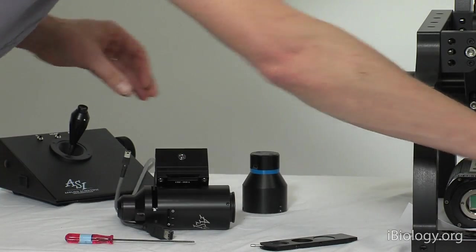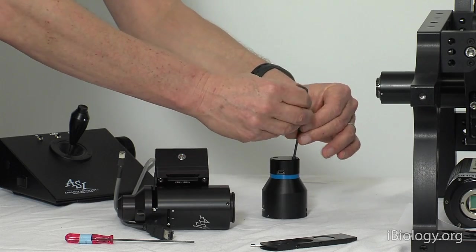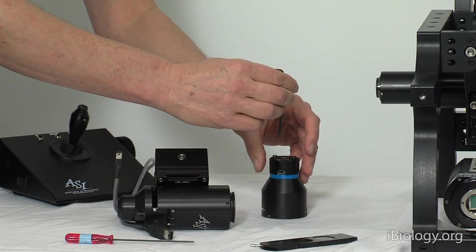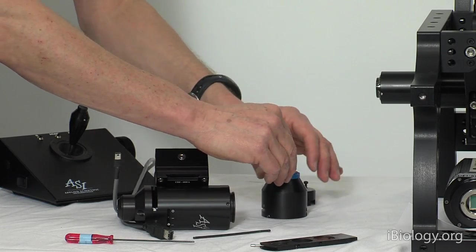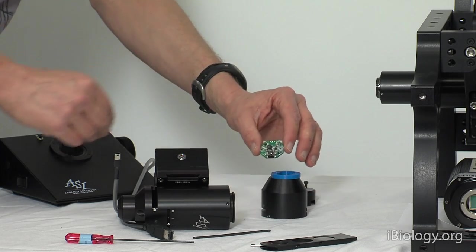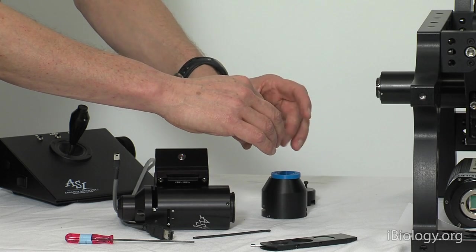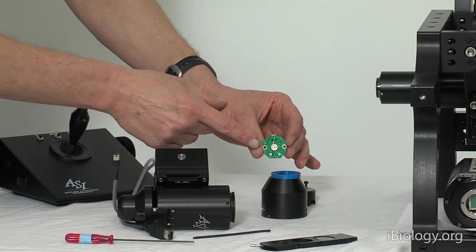Now we can take this even further apart. By unscrewing these two screws, we take out the top part and you see that this light source is literally a little circuit board with a USB connector on the side for power and the LED sitting right there.